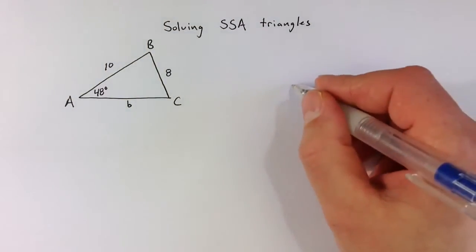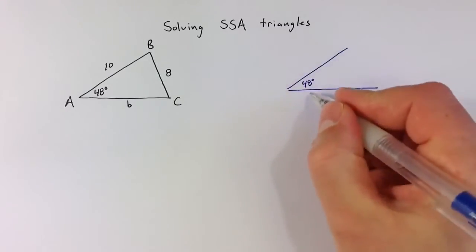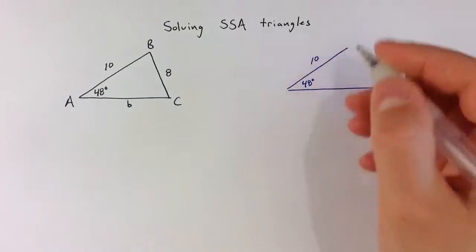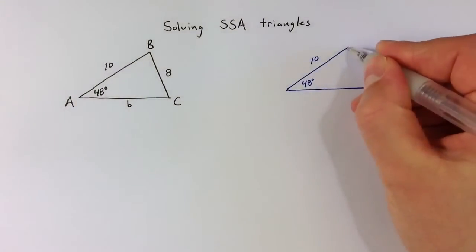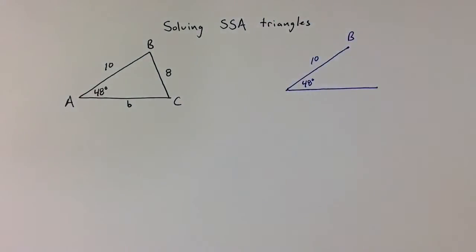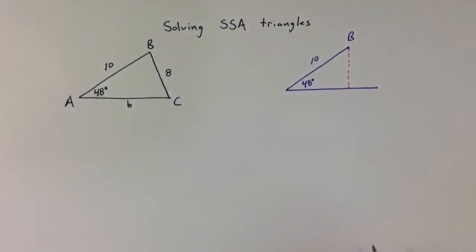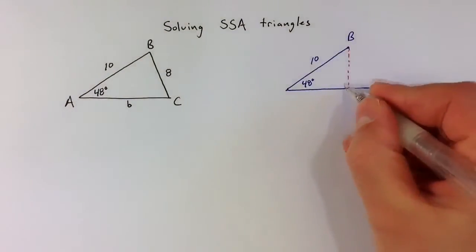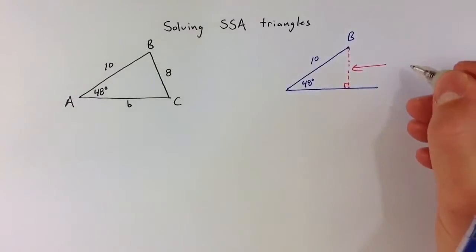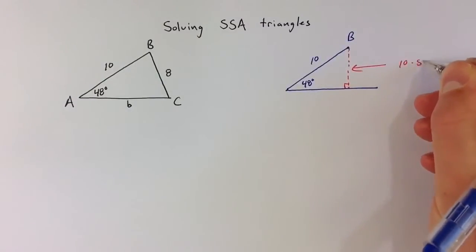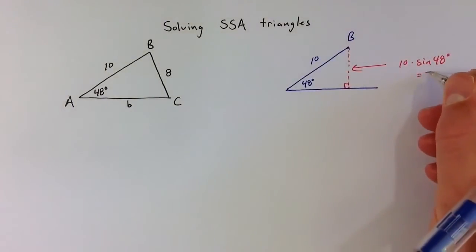To see why that is, with the given information—the angle of 48 degrees and the side length 10—they fix a picture here that requires the point up here at point B to be at least a certain distance away from the opposite side. We can figure out what that shortest possible distance would be because this distance is going to be 10 times the sine of 48 degrees, which turns out to be roughly 7.43.